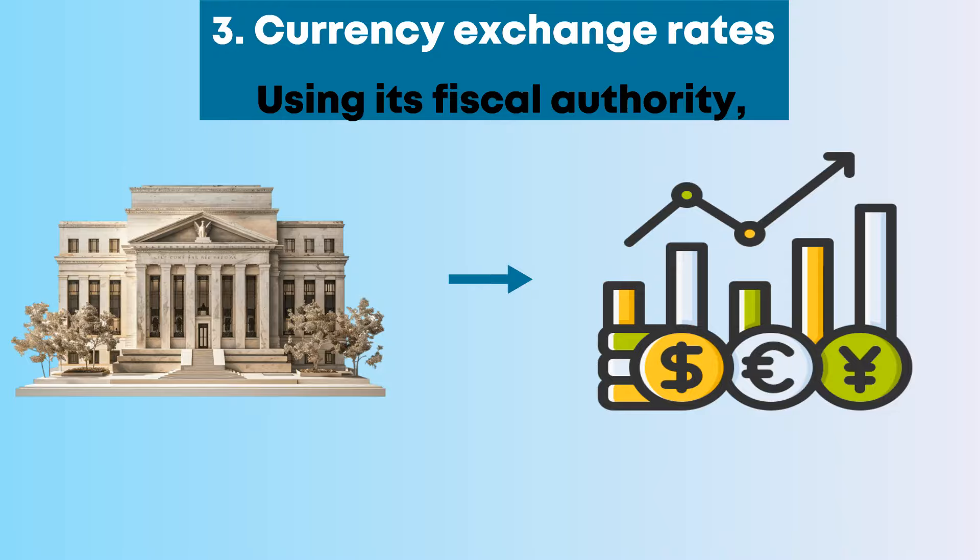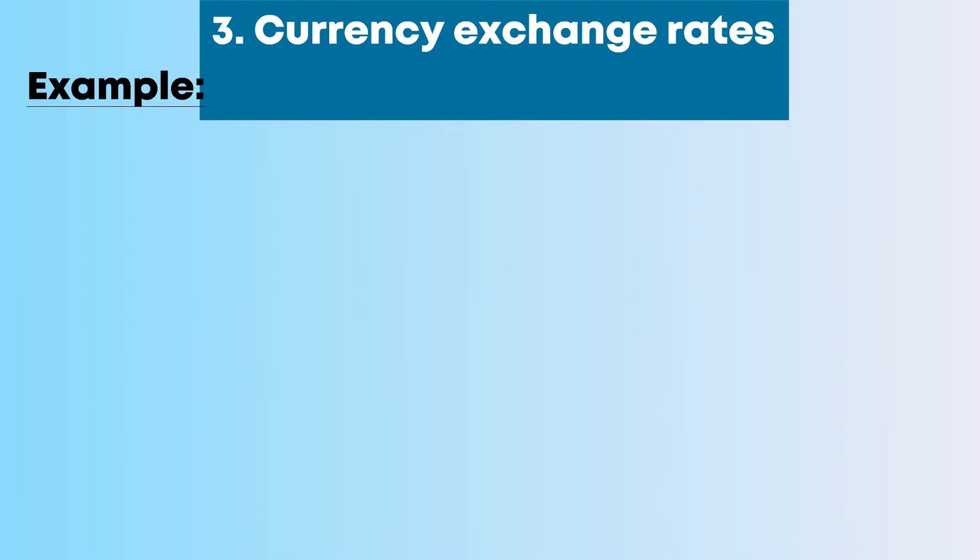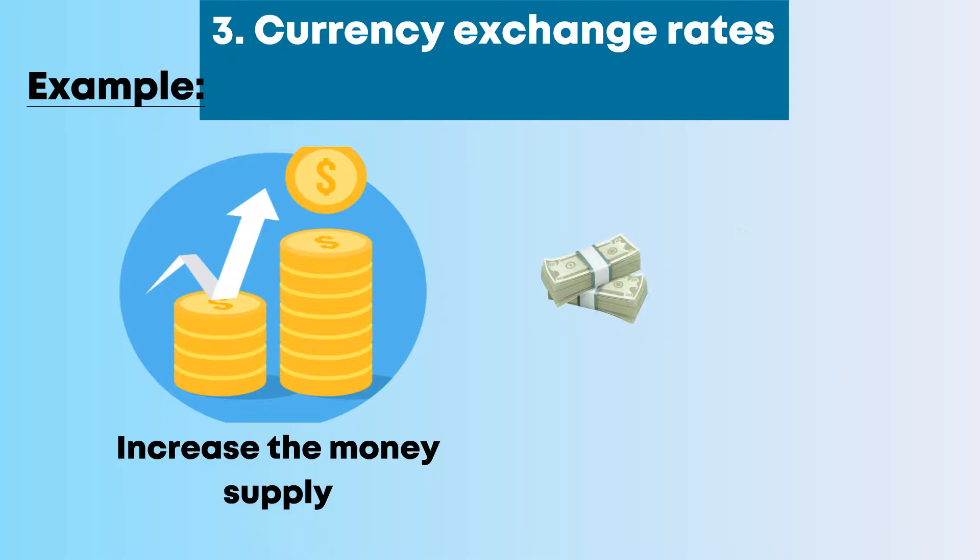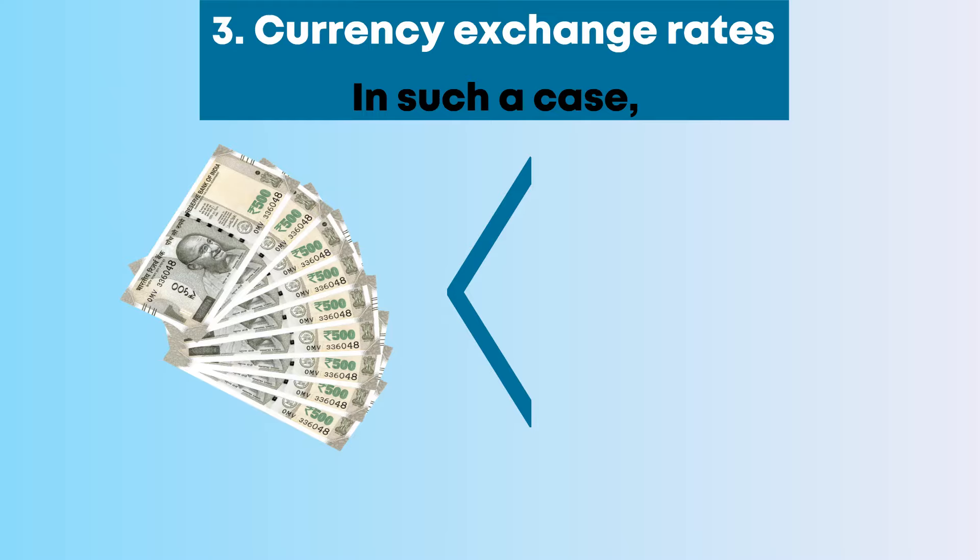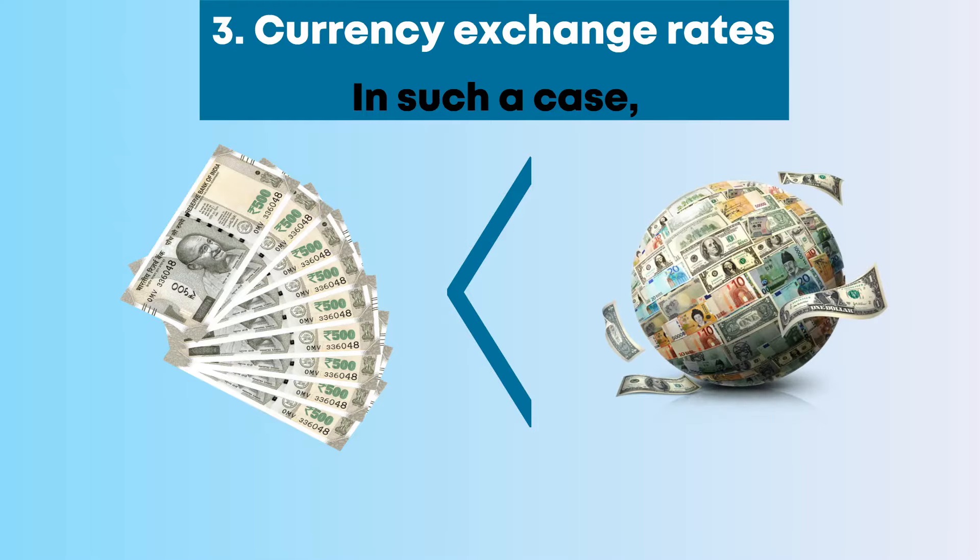Third, currency exchange rates. Using its fiscal authority, a central bank can regulate the exchange rates between domestic and foreign currencies. For example, the central bank may increase the money supply by issuing more currency. In such a case, the domestic currency becomes cheaper relative to its foreign counterparts.